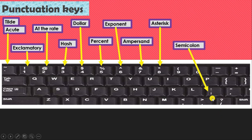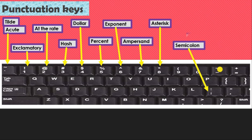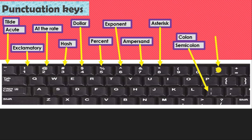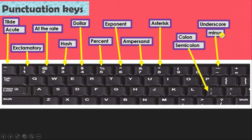The next key has two symbols: the lower one is the semicolon and the upper one is the colon. The following key has two symbols that confuse many students: the lower one is the minus sign and the upper one is the underscore. The equals-to sign key also has a plus sign above it.